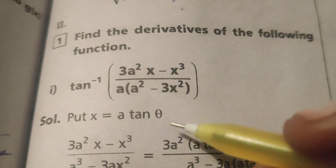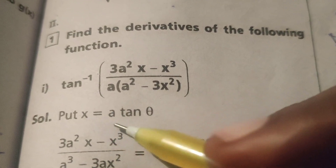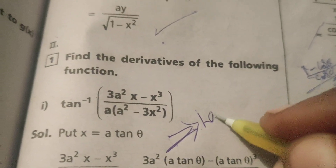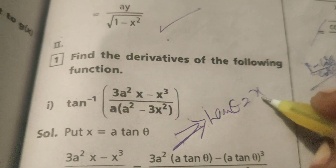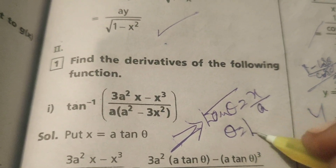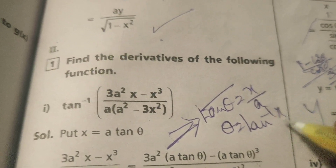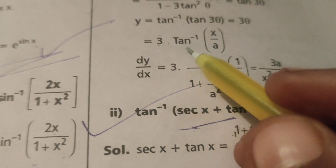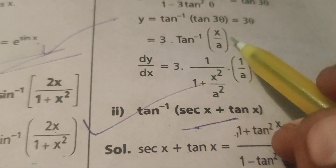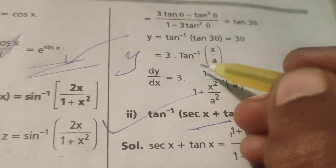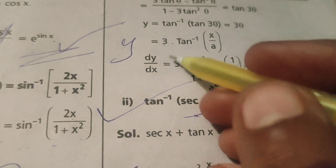Now back-substitute: since x = a·tan θ, we get tan θ = x/a, therefore θ = tan⁻¹(x/a). Substituting in place of θ, we get y = 3·tan⁻¹(x/a). Now differentiate this expression.